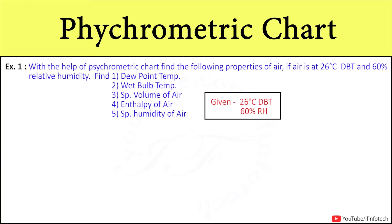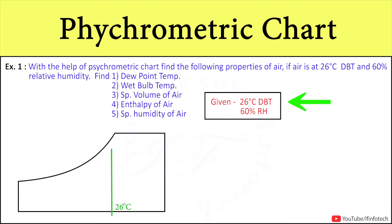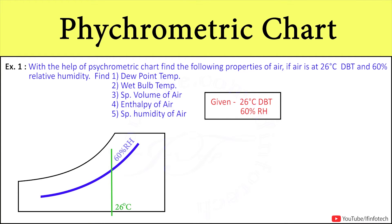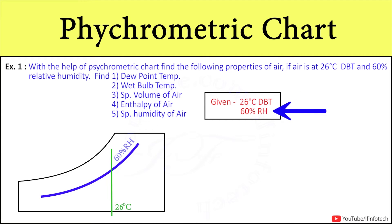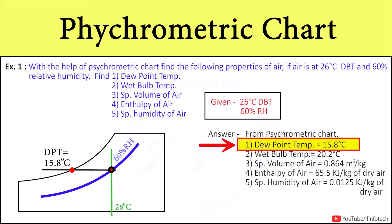The given data is air at 26°C dry bulb temperature and 60% relative humidity. On the psychrometry chart, we take the 26°C DBT line until it meets the curve at 60% relative humidity. Once plotted, we extend this line and get the dew point temperature as 15.8°C.